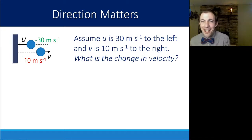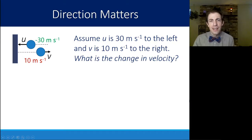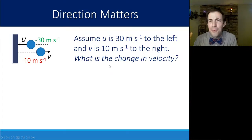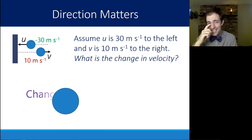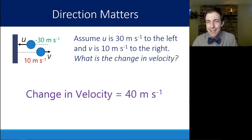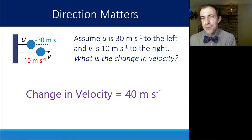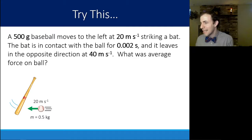When solving these problems, direction really matters. If a ball bounces off a wall and loses some speed — say initial velocity is 30 meters per second to the left and final is 10 meters per second to the right — the change in velocity is not 20. You can assign left as negative 30 and right as positive 10, or think of it as the ball stopping and reversing direction. Either way, the change in velocity is 40 meters per second.